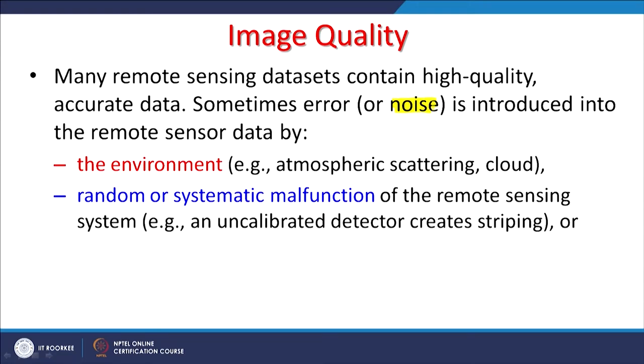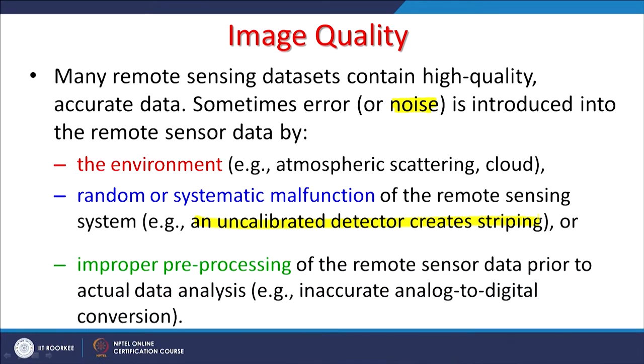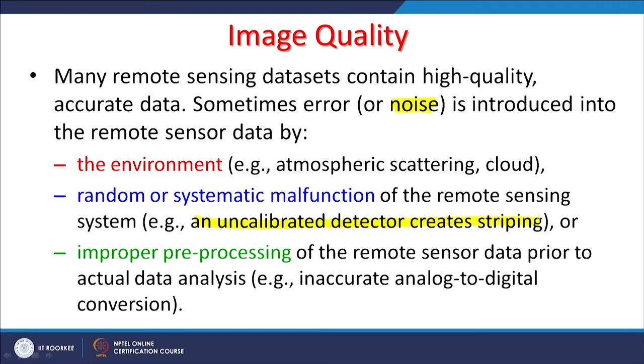Gases create absorption, reflection, and scattering in different parts of the spectrum and may create noise. Random or systematic malfunctions occur — for example, an uncalibrated detector creates striping. This used to happen more in earlier sensor technology, but calibrations have improved significantly and it is not very common now to see striping effects. However, some sensors within an array can still go bad and you start seeing striping.